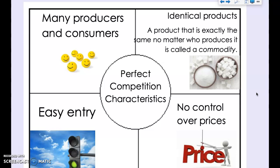As for ease of entry in a perfectly competitive market, it's pretty easy. Producers face very few restrictions in entering the market, and that ease of entry ensures existing producers face competition from new firms so a single producer won't dominate the market. As for control over prices, in a perfectly competitive market the producer has no market power — they can't influence prices because there are too many other producers offering the exact same thing. Market forces of supply and demand determine the price.